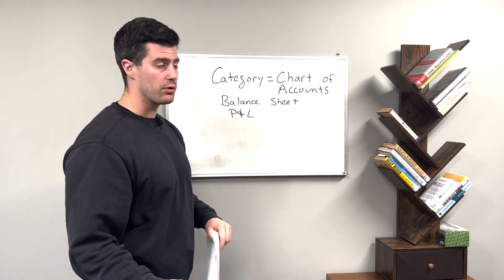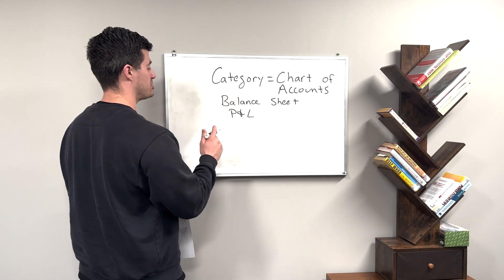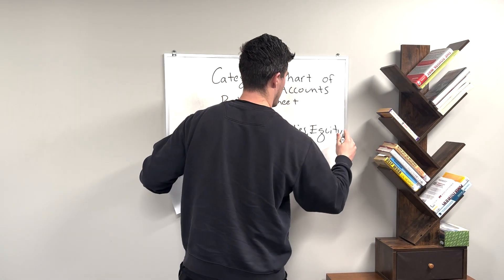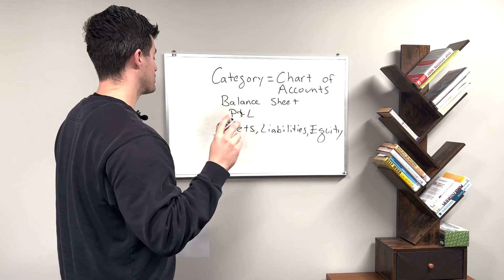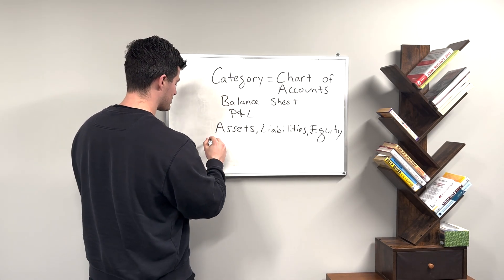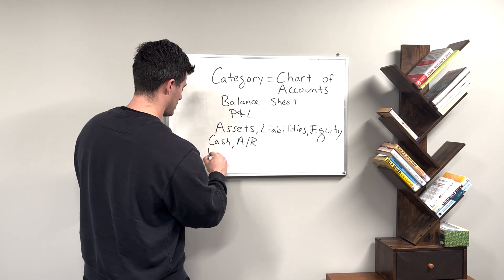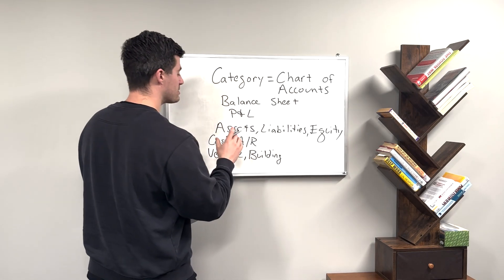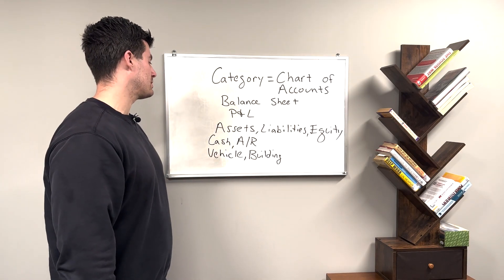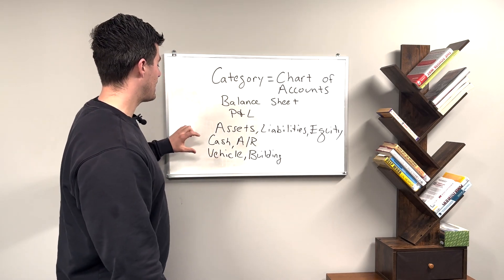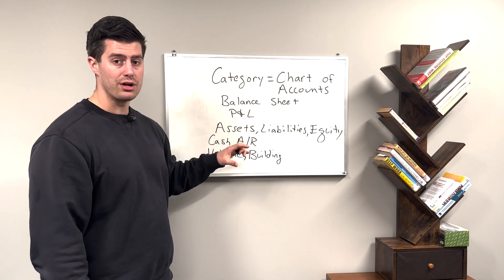I'm going to go over balance sheet first because there are fewer of them, but balance sheet categories are actually a little more difficult to conceptualize. On the balance sheet we have assets, liabilities, and equity. For assets, we would typically see things like cash, accounts receivable, vehicle, or building. These transactions don't happen very frequently — it's not often that we purchase a new vehicle or building — so categorizing transactions as an asset, liability, or equity isn't going to happen very often. But whenever it does happen, it's usually a pretty important transaction.